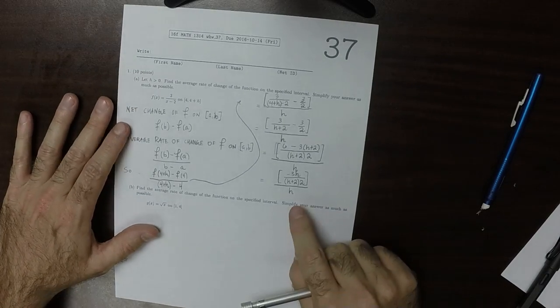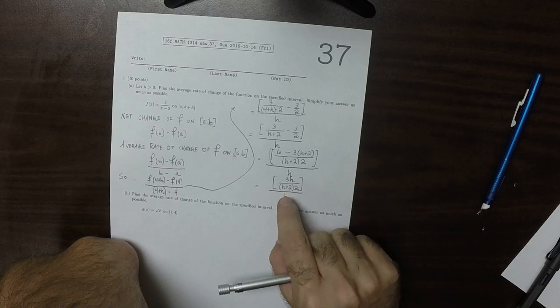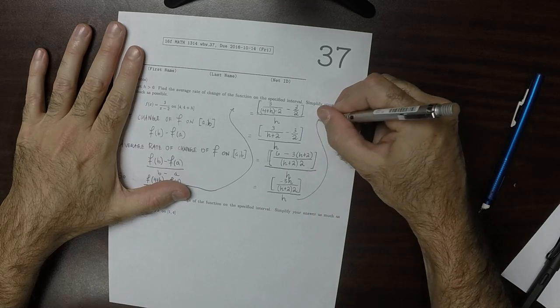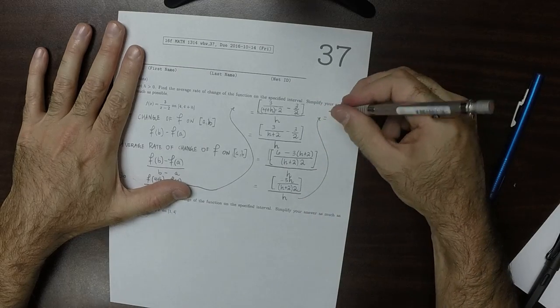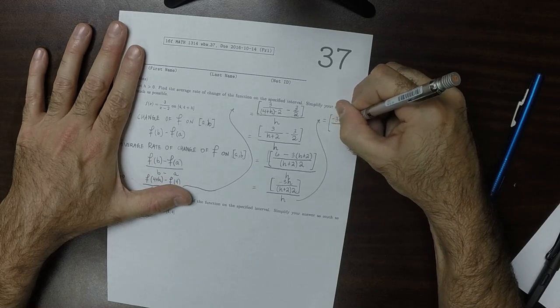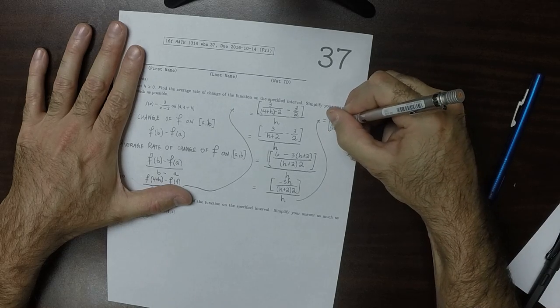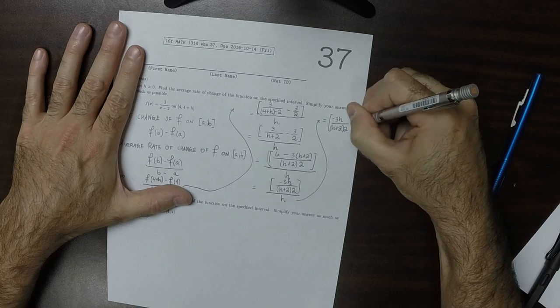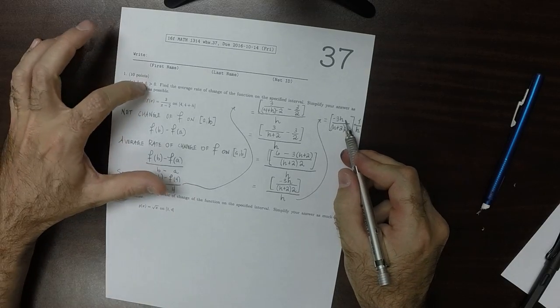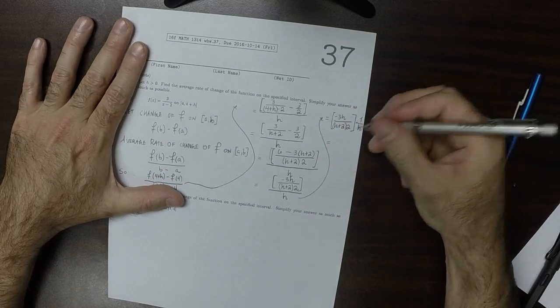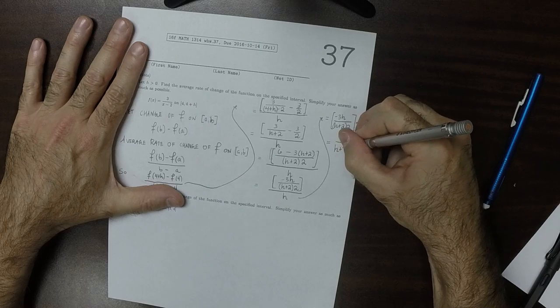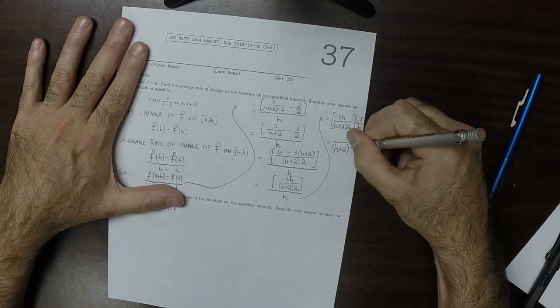And so now, a further simplification can occur, because dividing by H is the same as multiplying by the reciprocal. So this could be written as negative 3H in the numerator, and then over (H+2) times 2, and then multiply by 1 over H. And now you can see these H's will cancel, because H is not 0. And we get negative 3 over (H+2) times 2.